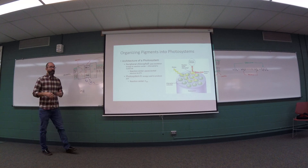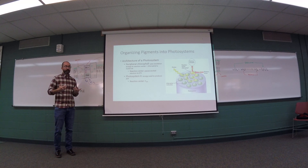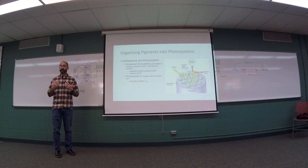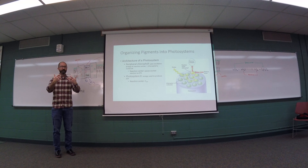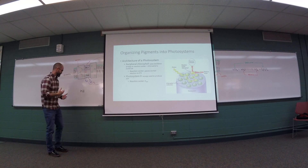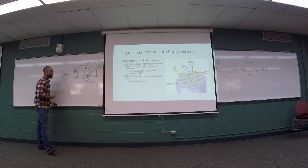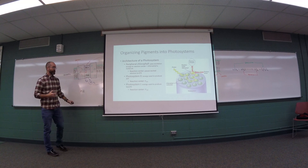At photosystem 2, the receptor molecule at the bottom — the molecule that's receiving energy — is P680. And in photosystem 1, it's P700.